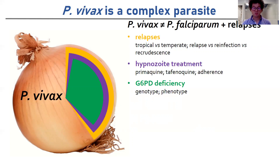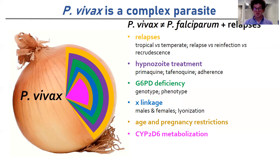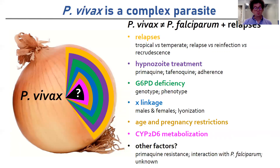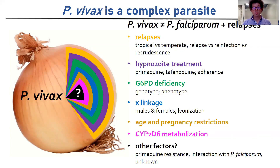If we give primaquine to a G6PD deficient individual they may have a severe hemolytic event. Another layer is the X-linkage of G6PD deficiency, so it manifests differently in men and women. We also have age and pregnancy restrictions, low CYP2D6 metabolization, and other factors. Now if we had a single dose radical cure with no restrictions we wouldn't have to worry about any of this complexity, but unfortunately we don't. We have primaquine and tafenoquine, so we need to deal with this complexity, and models can provide a good framework to handle all of these different factors.